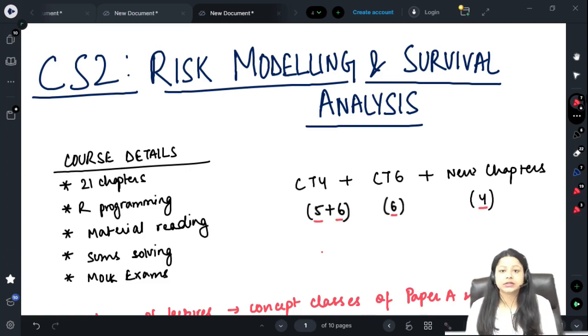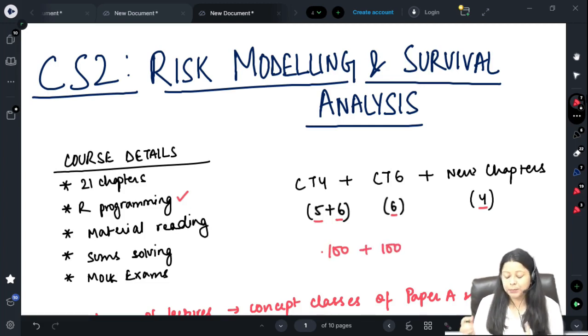Another thing which is added in the syllabus is R programming. There are 2 examinations of CS2: paper A and paper B. Paper A is 100 marks theory and paper B is again 100 marks practical which is R programming, 1 hour 45 or 1 hour 50 minutes examination.